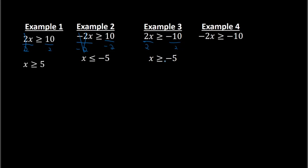Example 4: we have negative 2x greater than or equal to negative 10. To solve this I need to get rid of the negative 2, and I do that by dividing both sides by negative 2. The negative 2s cancel. On the right side, negative divided by negative gives me a positive 5. So I have x on the left and 5 on the right. Because I'm dividing by this negative 2, I need to switch the inequality to a less than or equal to sign. So my answer is x is less than or equal to 5.